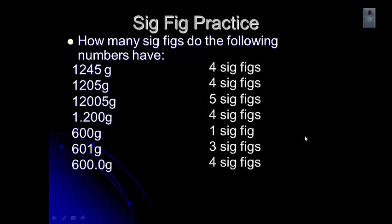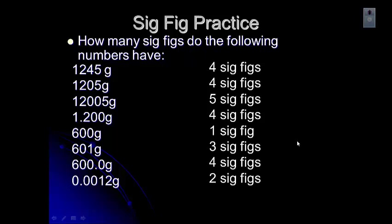The next number has two sig figs. These zeros are after a decimal point, but there's no non-zero digit in front of them — those are placeholder zeros, not significant figures.